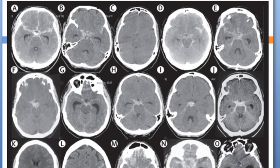This CT scan of the head shows blood in the sulcal system, and there is also ventricular extension.